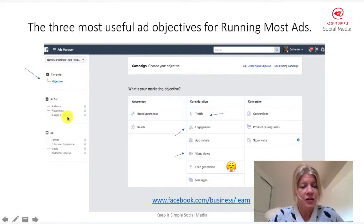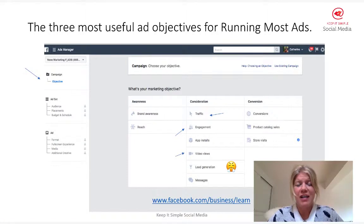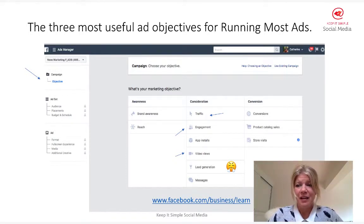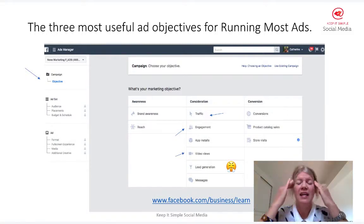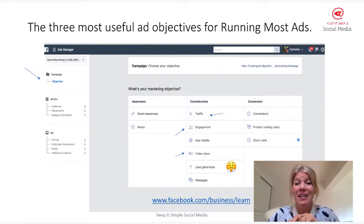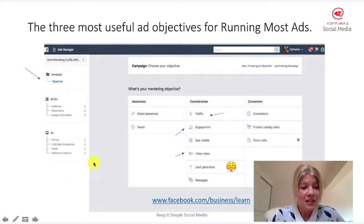Budget and schedule is a really important one because you are in charge — I cannot tell you enough, you are in charge. And if you are not in charge because you gave access to an agency, make sure you know how much you're spending and make sure you get a report on your success — at least a monthly report to see how your accounts are doing, how much you're spending, what the results are, how many engagements, how many 10-second video views, and so on.